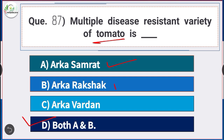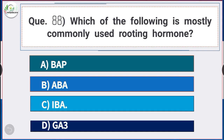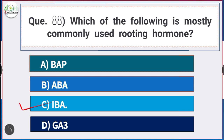Question number 88: Which of the following is the most commonly used rooting hormone? Answer is option C — IBA. IBA is the most commonly used rooting hormone.